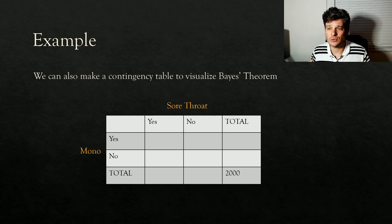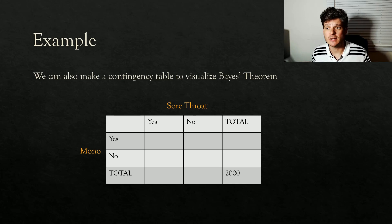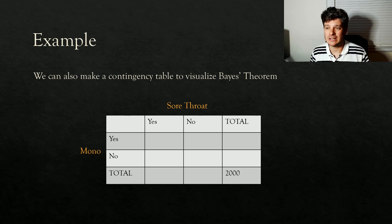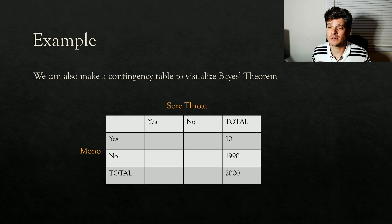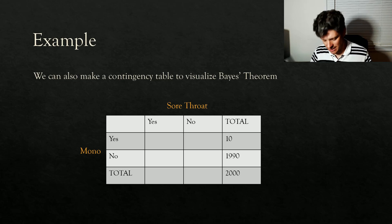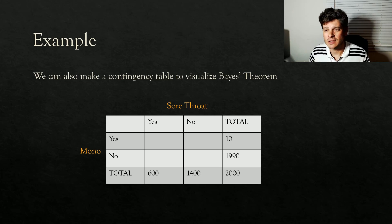I also like to set up a contingency table whenever I do Bayes' theorem problems — it helps organize my thoughts much better. It's like drawing the squares, except you don't need to draw thousands of squares. We just need two different events that can be yes or no, as complements of each other. I'll use 2,000 people total. The first part is mono: 10 people have mono, which means 1,990 do not. Then for sore throats: 600 people had a sore throat, which means 1,400 do not — everything adds up to our total.